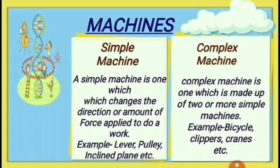I hope you all have understood about force, work, and energy. Now let's move to machines. A machine is a tool that is used to make our work easy. There are two types of machines: a simple machine and a complex machine. Simple machines are simple tools with few parts, used to change the direction or amount of force applied to do work. Examples include levers, pulleys, inclined planes, etc. A complex machine is made up of two or more simple machines combined together — for example, your bicycle, nail clippers, cranes, etc.